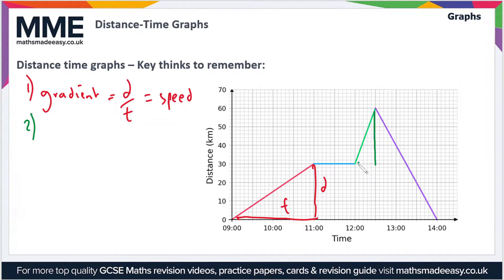Following on from that first point, the second point is that the steeper the gradient, the faster the speed. Here you can see this green section is a much steeper part of the graph than the red section, so steeper equals faster.